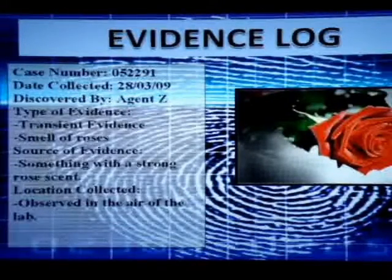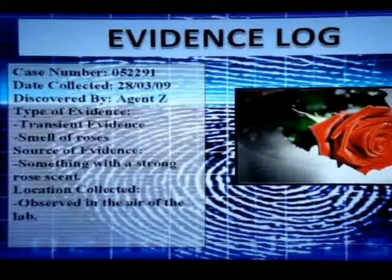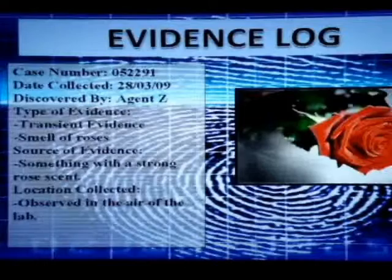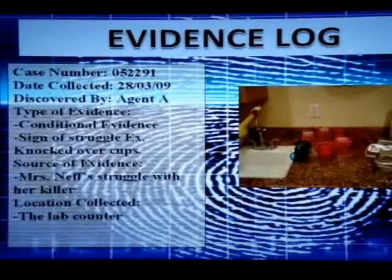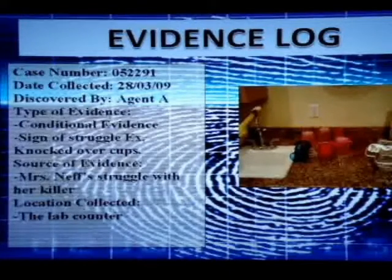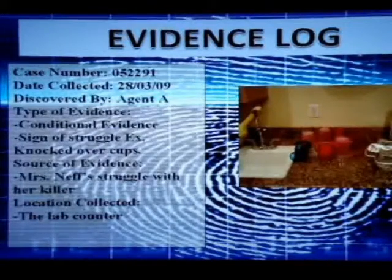This evidence was really odd — the entire crime scene smelled like roses. It could have come from something Ms. Neff was working on in her laboratory. Since this scent isn't going to last, it's called transient evidence. Other examples of transient evidence are smoke, odors, and any liquids — because they can all disappear. Ms. Neff's lab bench was all thrown out of order, which shows there was a struggle. This is conditional evidence because it fits with the conditions of the crime. In the way the cups fell, we can determine the angle at which Ms. Neff was attacked, and this helps us reconstruct the scene.